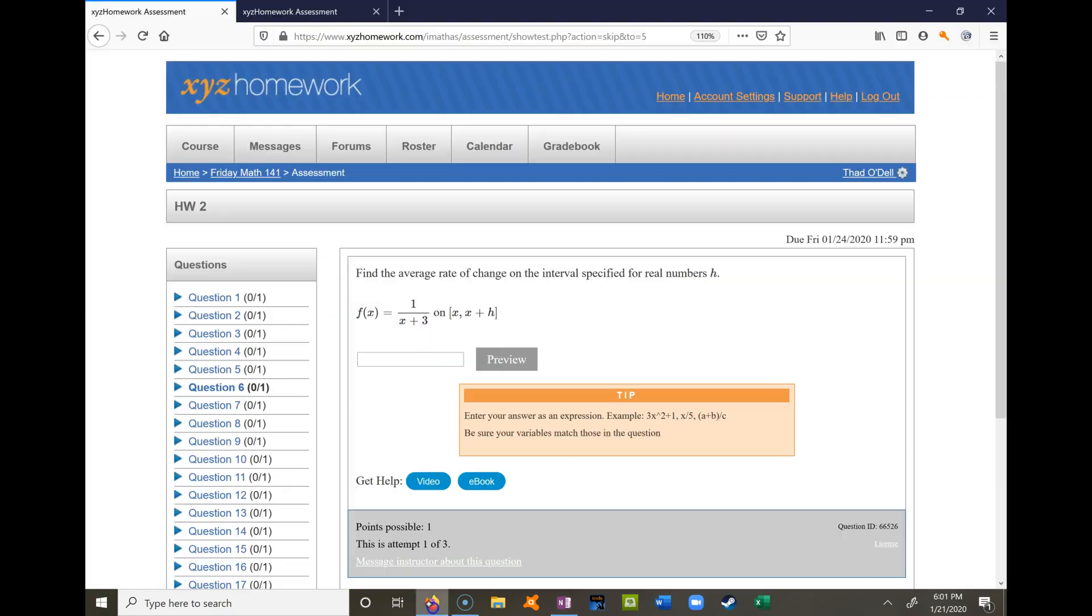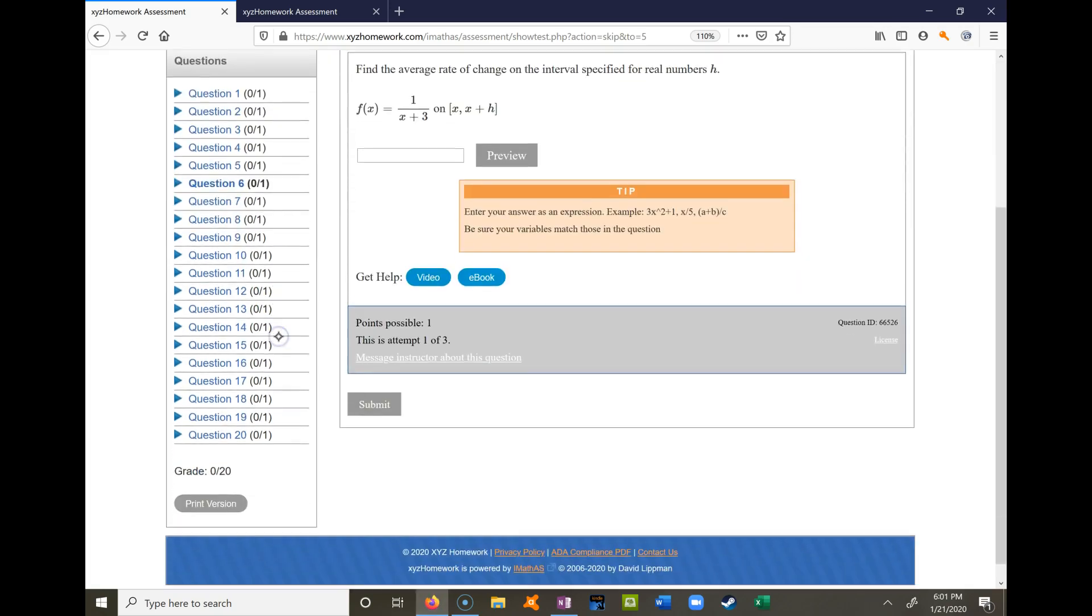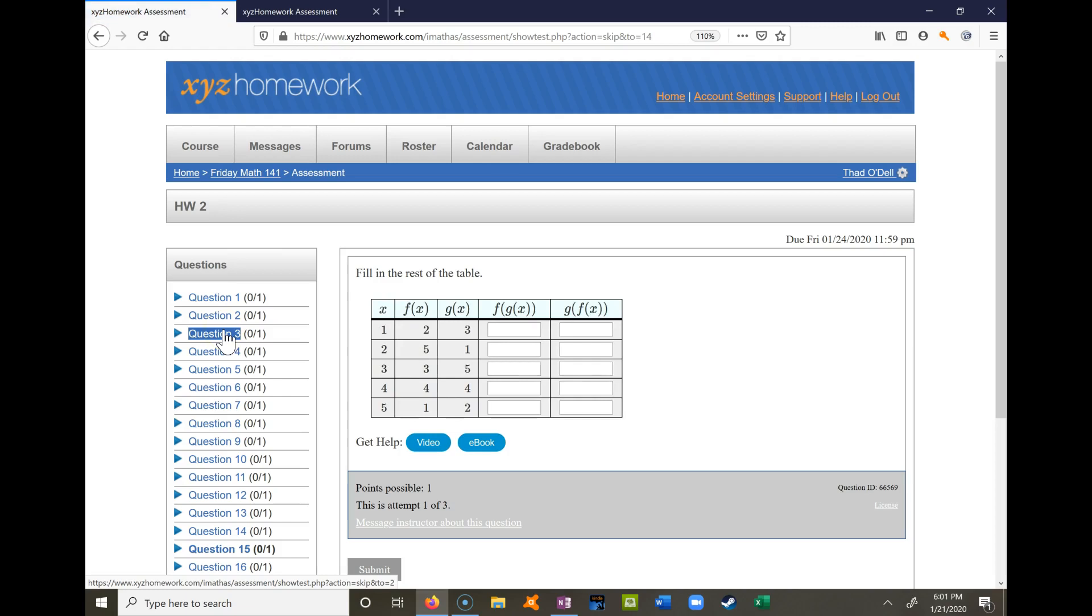The other one that a lot of people have been having trouble with is homework two, question 15. So just first of all, to understand the table, the first column is just x values that are input values. The next two columns are output values based on the different functions. So what this first row is telling me is that when I plug a one into the f function I get out a two, and when I plug a one into the g function I get out a three.